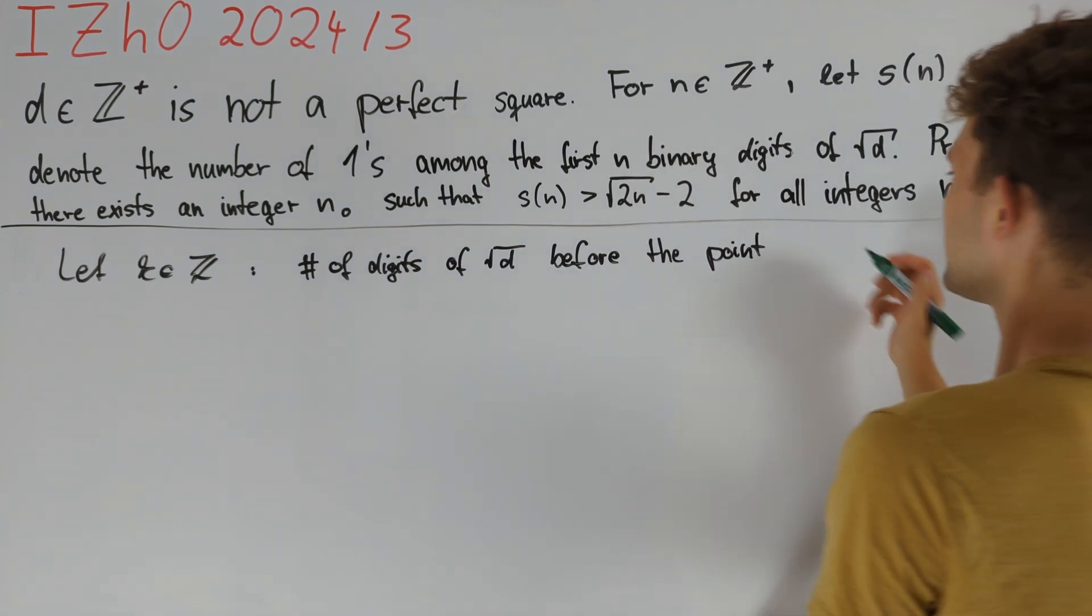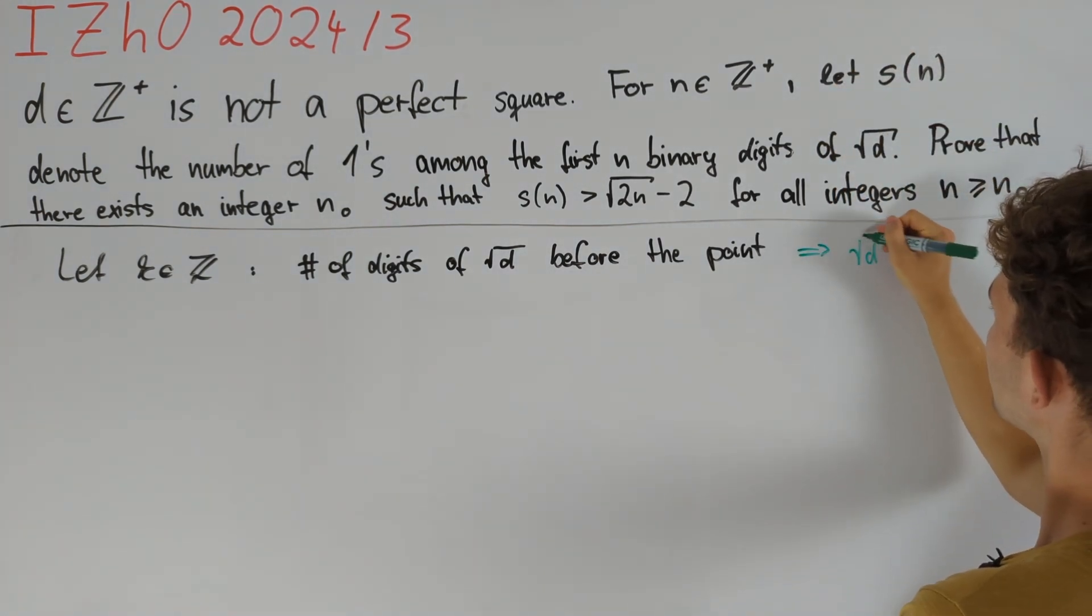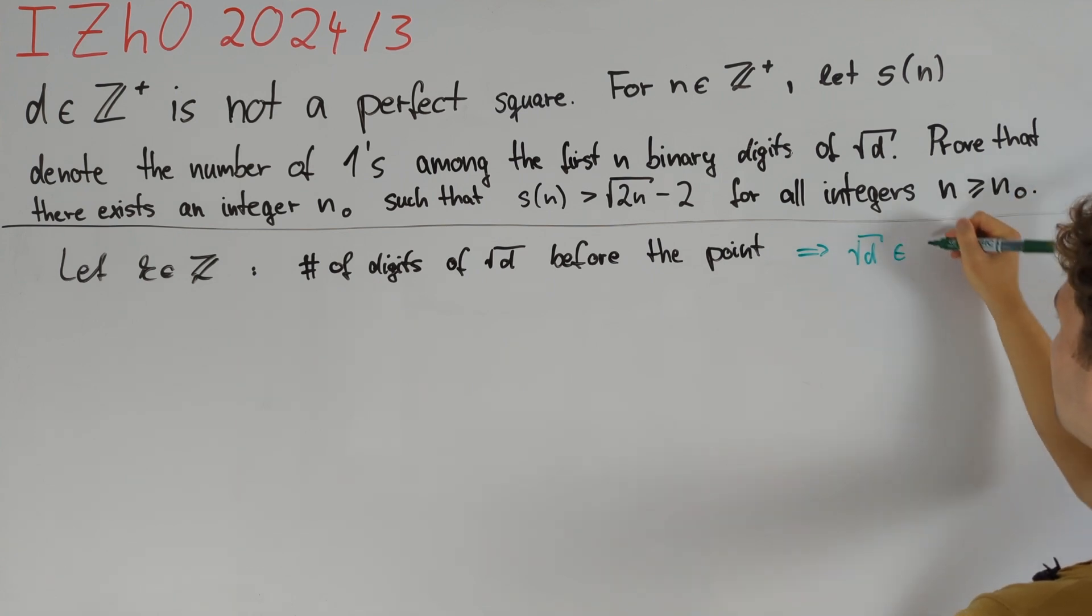And this first digit gives us a 2 to the power of k minus 1 for the value of square root of d, and therefore square root of d must lie in the interval from 2 to the power of k minus 1 up to but not including 2 to the power of k.